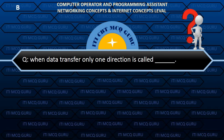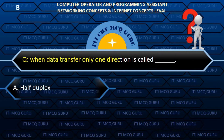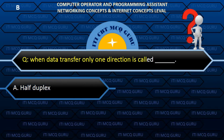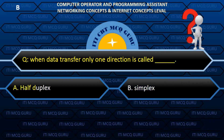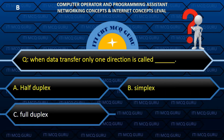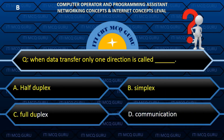When data transfers in only one direction, it is called: B. Simplex.